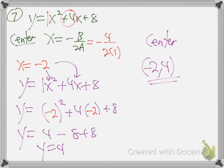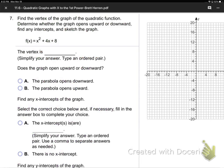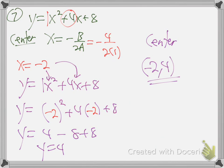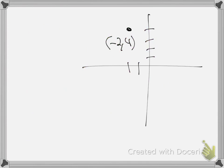So h of t equals negative 16t squared plus 128t. That is the height in feet after t seconds. So some projectile is fired up. What do they want from me? Maximum height.